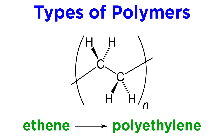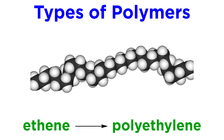Ethene can polymerize to form polyethylene. This is just thousands of fully saturated CH2 units perpetuating, like a never-ending straight-chain alkane. This substance is a flexible plastic with many applications.